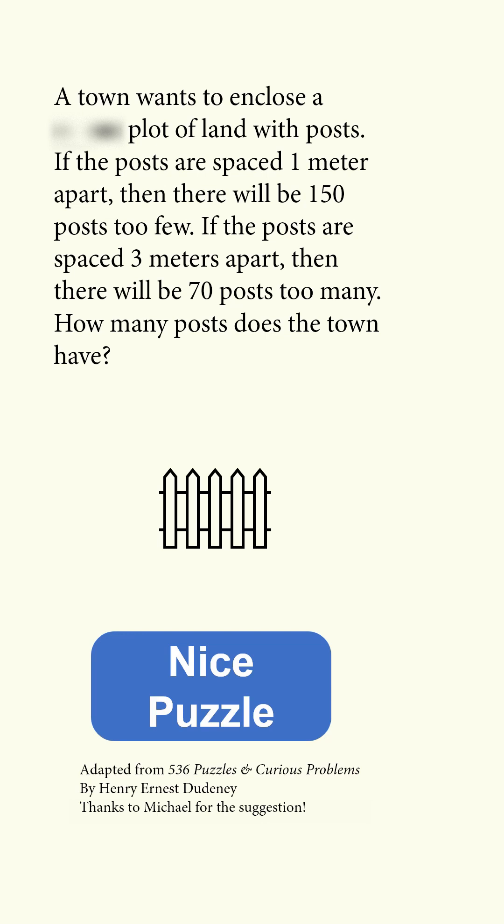Here's a nice puzzle. A town wants to enclose a square plot of land with posts. If the posts are spaced 1 meter apart, then there will be 150 posts too few. If the posts are spaced 3 meters apart, then there will be 70 posts too many. How many posts does the town have?